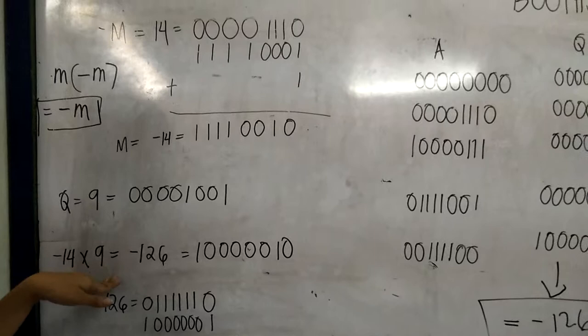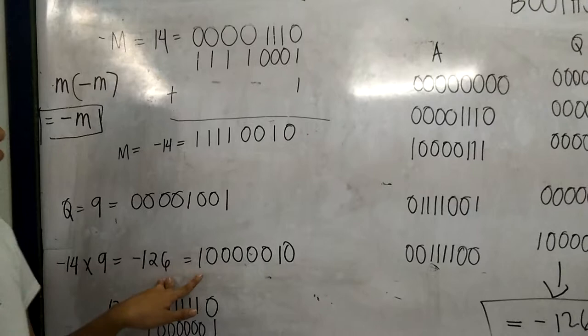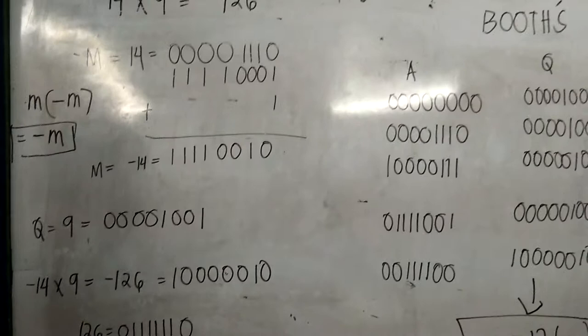Then the next step is negative 14 times 9 is equal to negative 126. The negative 126, the binary is 1000 0010.